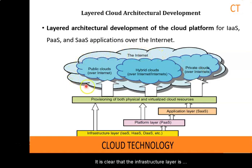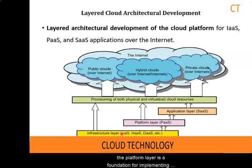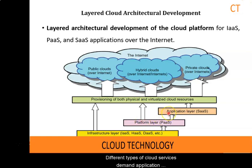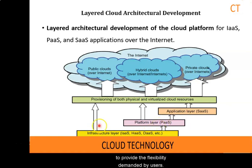The infrastructure layer is deployed first to support Infrastructure as a Service. These infrastructure layers serve as the foundation for building the platform layer of the cloud for supporting Platform as a Service. In turn, the platform layer is the foundation for implementing the application layer for Software as a Service applications. The infrastructure layer is built with virtualized compute, storage and network resources, and the abstraction of these hardware resources provides the flexibility demanded by users.